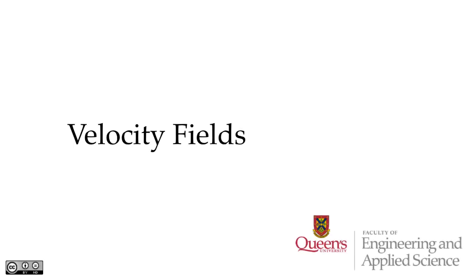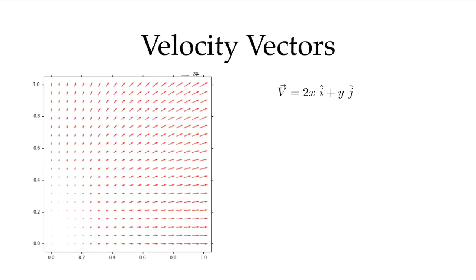Let's start with some ways of visualizing velocity fields. Here is a vector field, an arbitrary vector field that I've made up. Let's say our velocity vector is 2x — the u component is 2x and the v component is y. So our velocity vector is 2xi plus yj.